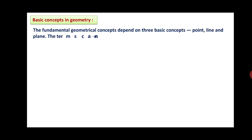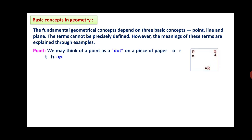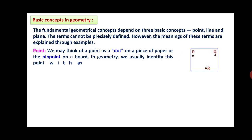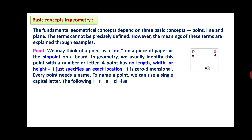Now we will continue with the basic concepts in geometry. The fundamental geometrical concepts depend on three basic concepts: point, line and plane. These terms cannot be precisely defined; however, their meanings are explained through figures and examples. A point is the first concept. We may think of a point as a dot on a piece of paper or a pinpoint on a board. A point has no length, width or height — it just specifies an exact location. It is zero-dimensional.